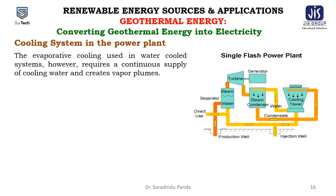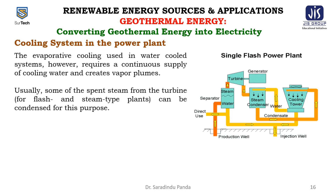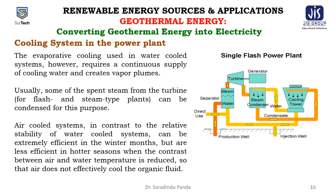Evaporative cooling used in water-cooled systems, however, requires a continuous supply of cooling water and creates vapor plumes. Usually, some of the spent steam from the turbine for flash or steam type plants can be condensed for this purpose. Air cooling systems, in contrast to the relative stability of water cooling systems, can be extremely efficient in winter months but are less efficient in warmer seasons, when the contrast between air and water temperatures is reduced and the air does not effectively cool the organic fluid.